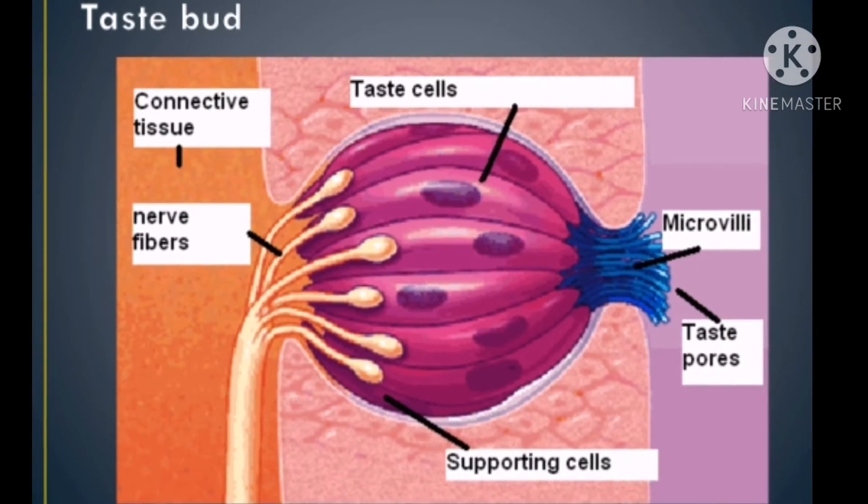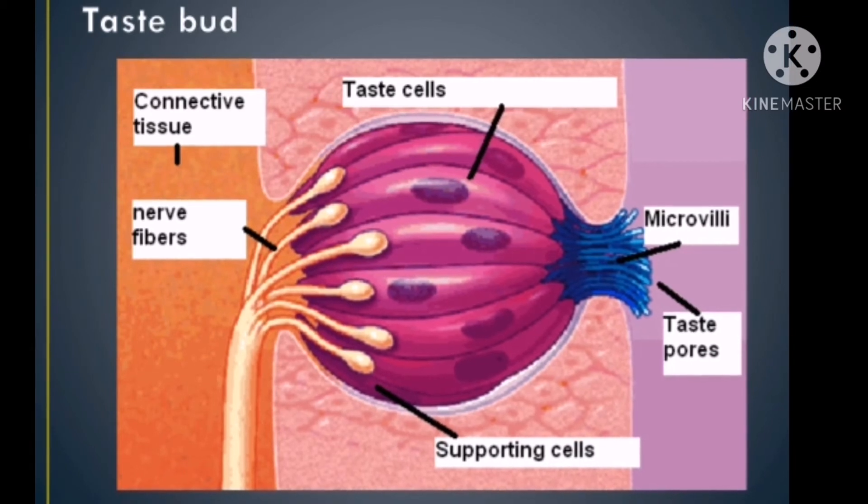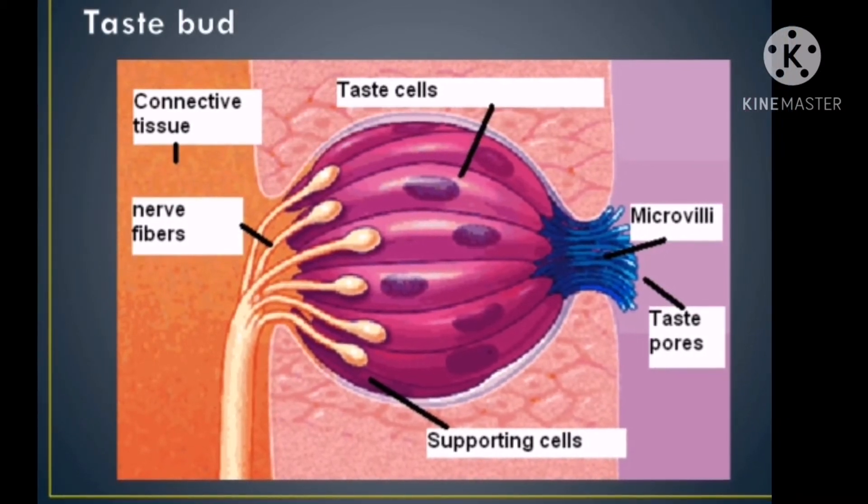The taste bud contains the taste receptor cells that send information detected by clusters of various receptors to the brain.